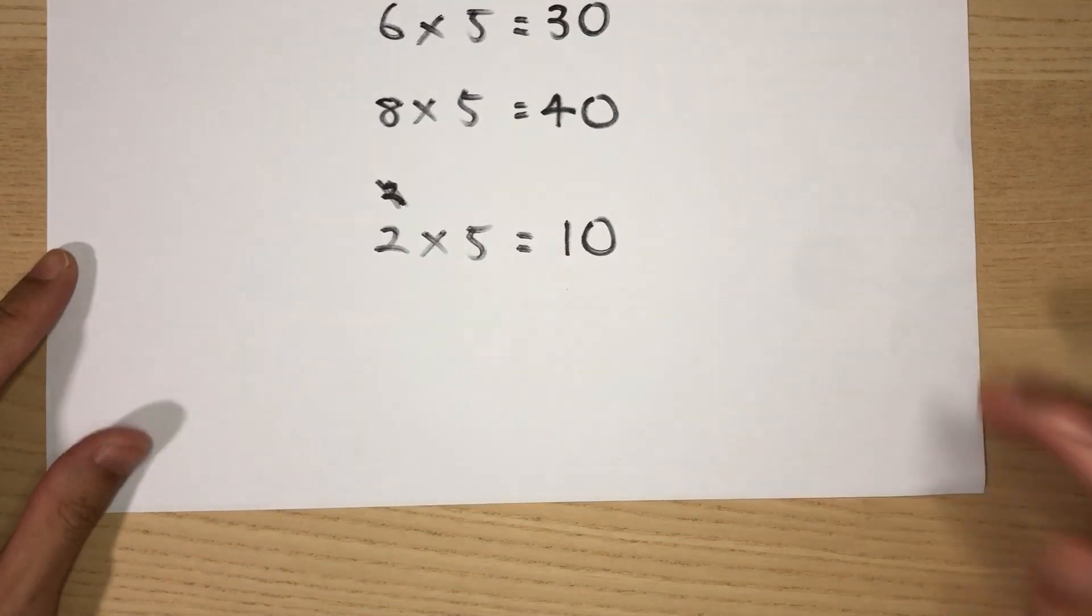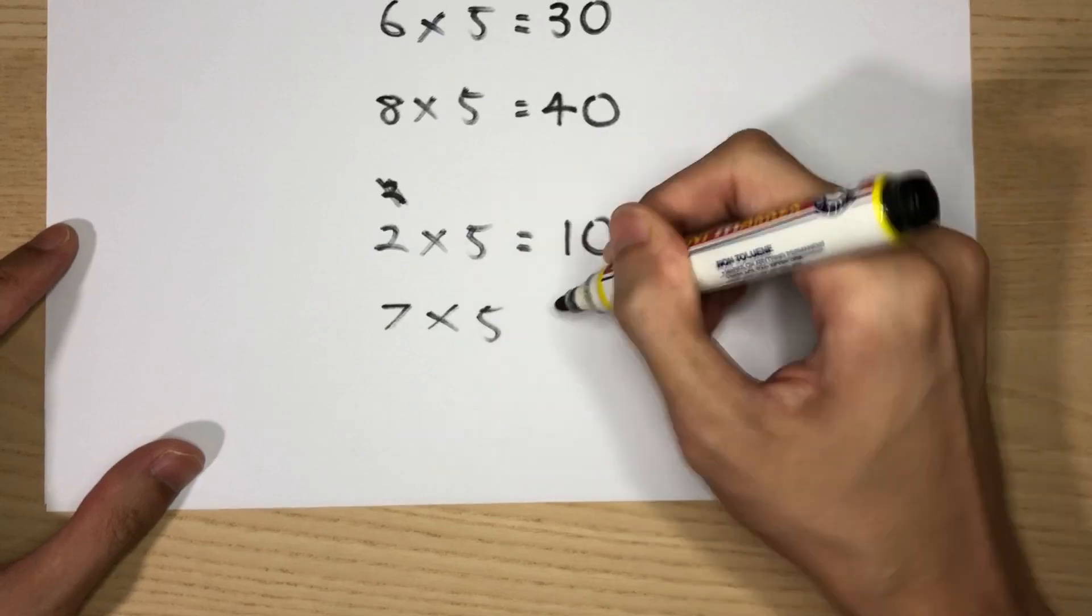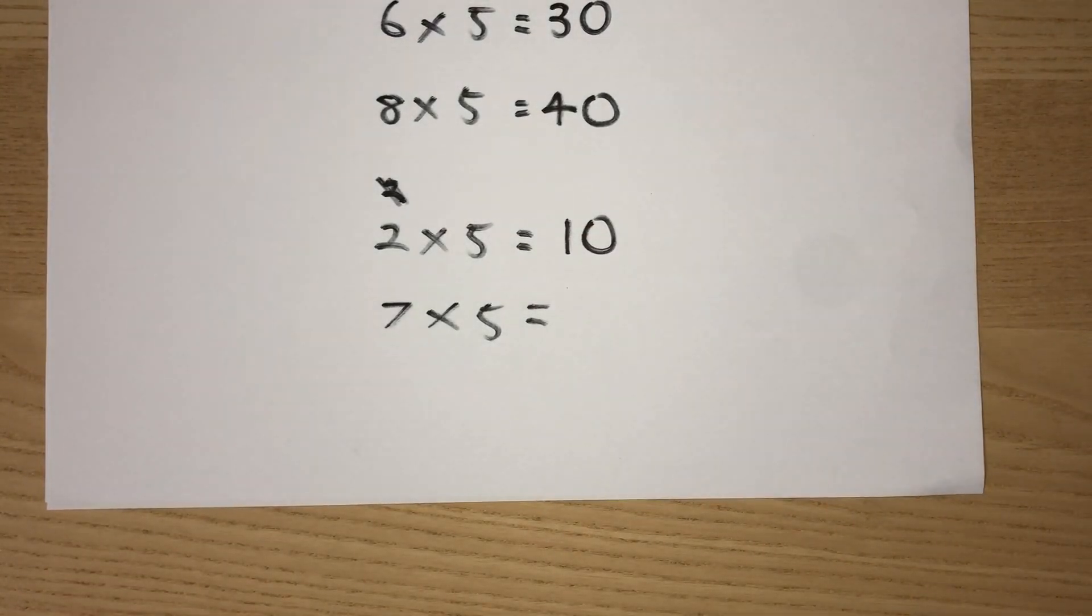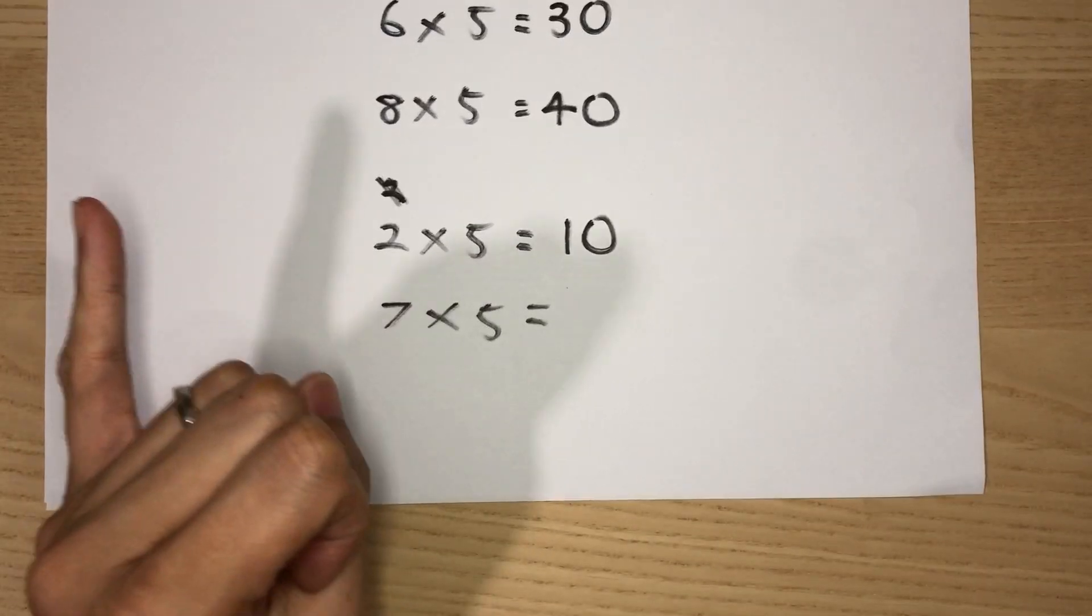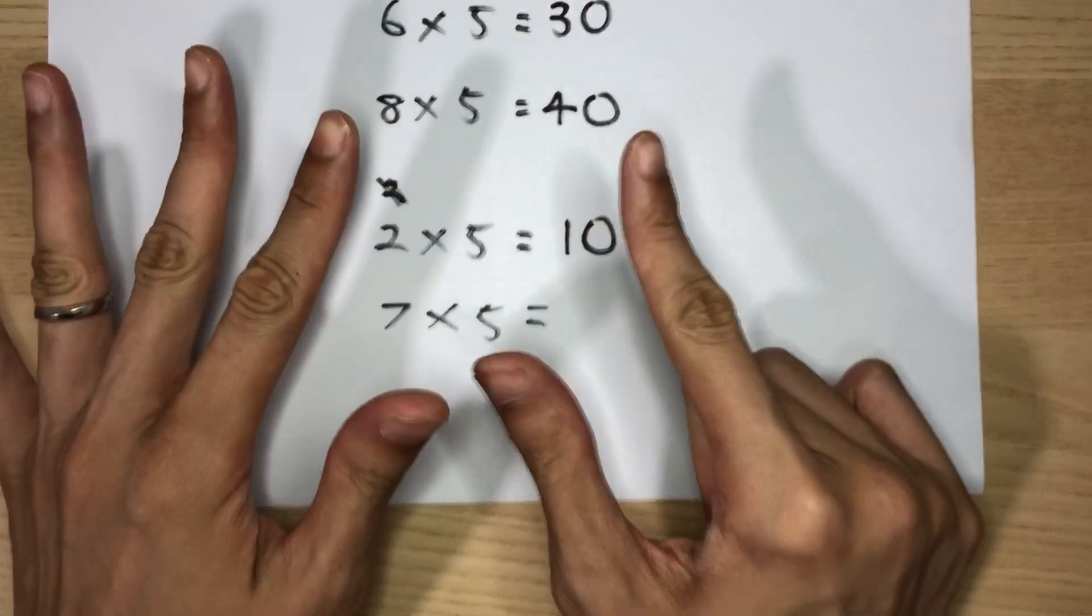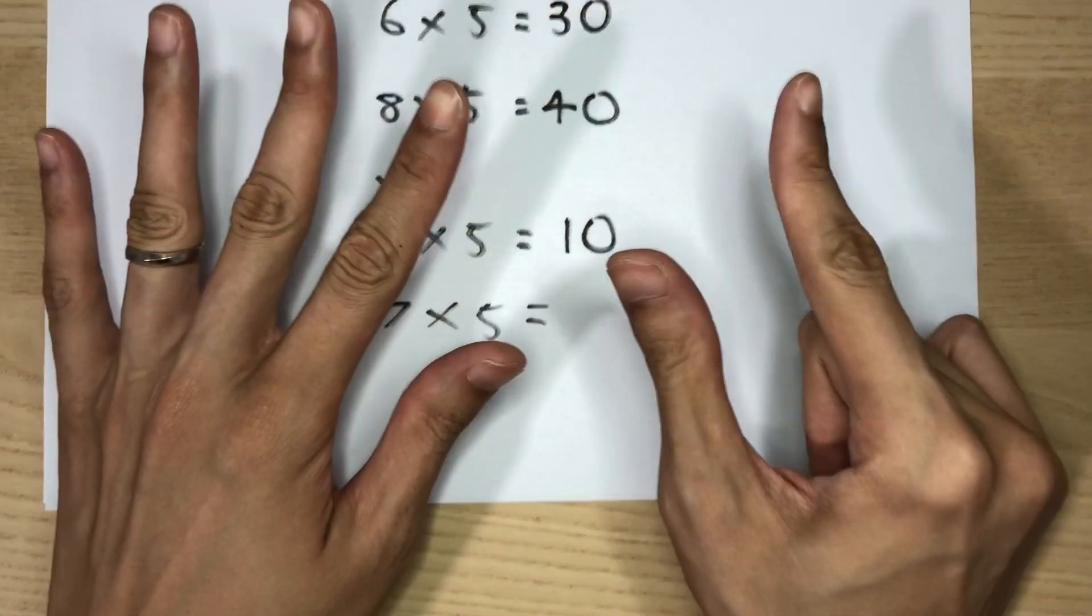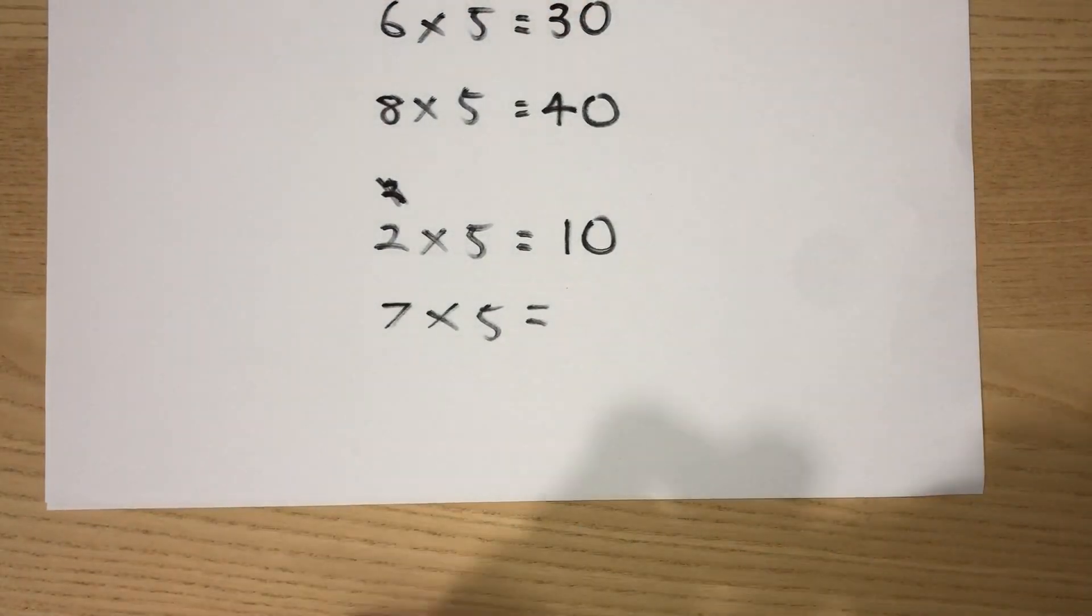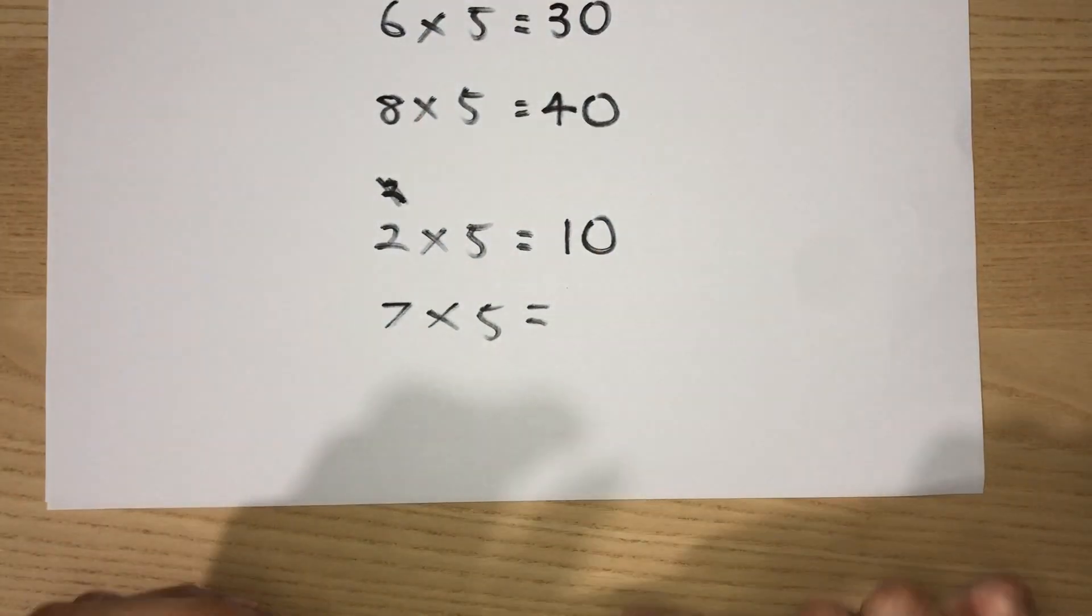Let's do one last example. Let's try 7 times 5. What is that? Try it on your own. Have you got it? Let's do it together. 5, 10, 15, 20, 25, 30, 35. I stop here. Why? Because I've shown 7 fingers. So 7 fingers. And what was the answer? 5, 10, 15, 20, 25, 30, 35.